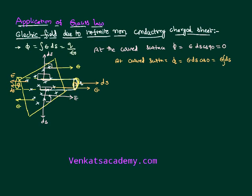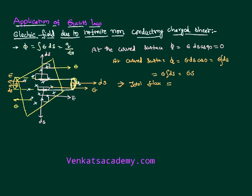Taking the integral, the flux through one circular cap is E times S, where S is the surface area of that circular cap. Now, the total flux — both caps combined — is ES from the left cap plus ES from the right cap, giving 2ES. Both fluxes are added because both are due to positive charges, so both fluxes are radially outward and in the same direction.